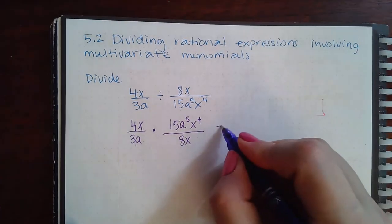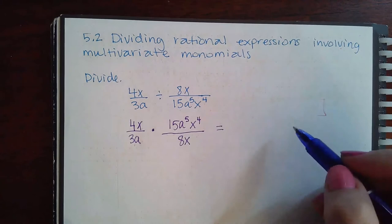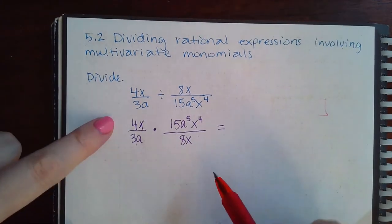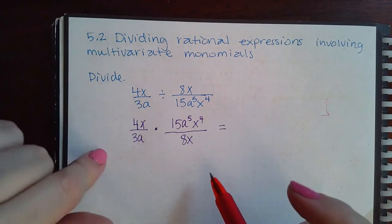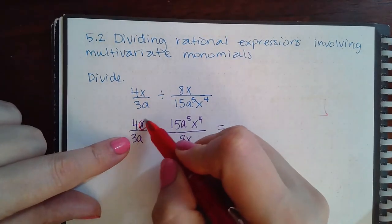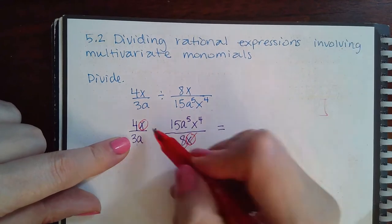Once you have that, then it's just a matter of simplifying what you have. Remember, it's any top with any bottom when you're reducing. I notice that I have an x here and an x here—those can reduce, it's a top and a bottom.